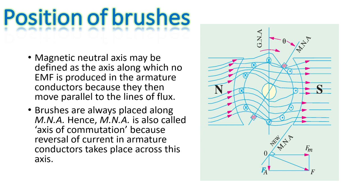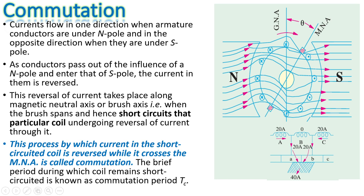The position of the brushes is of vital importance. The magnetic neutral axis is defined as the axis along which no EMF is produced in the armature conductors, because they are moving parallel to the lines of flux. Brushes are always placed along the magnetic neutral axis; hence the magnetic neutral axis is also called the axis of commutation, because reversal of current in armature conductors takes place across this axis. Current flows in one direction when armature conductors are under any one pole — for example under the north pole — and in the opposite direction under the south pole.